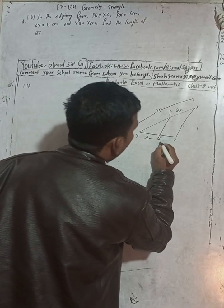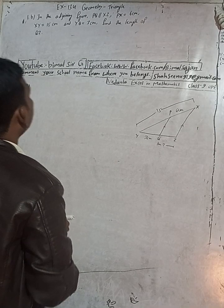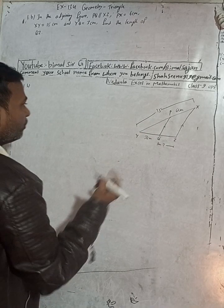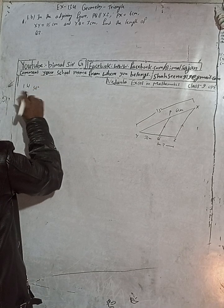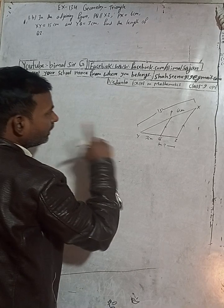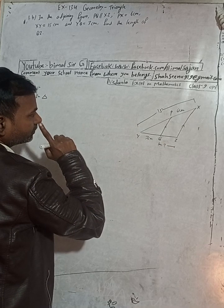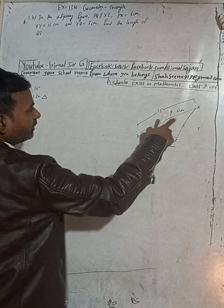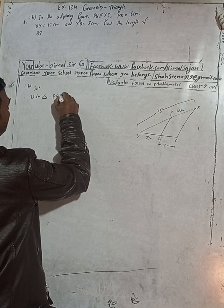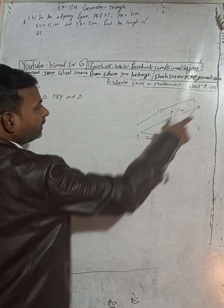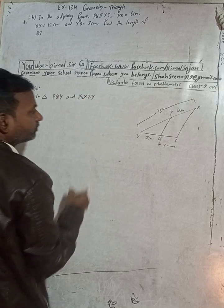So QZ is what we have to find. First of all, we have to show the triangles are similar. So in the solution, I will take triangle PQY corresponding to triangle XZY.